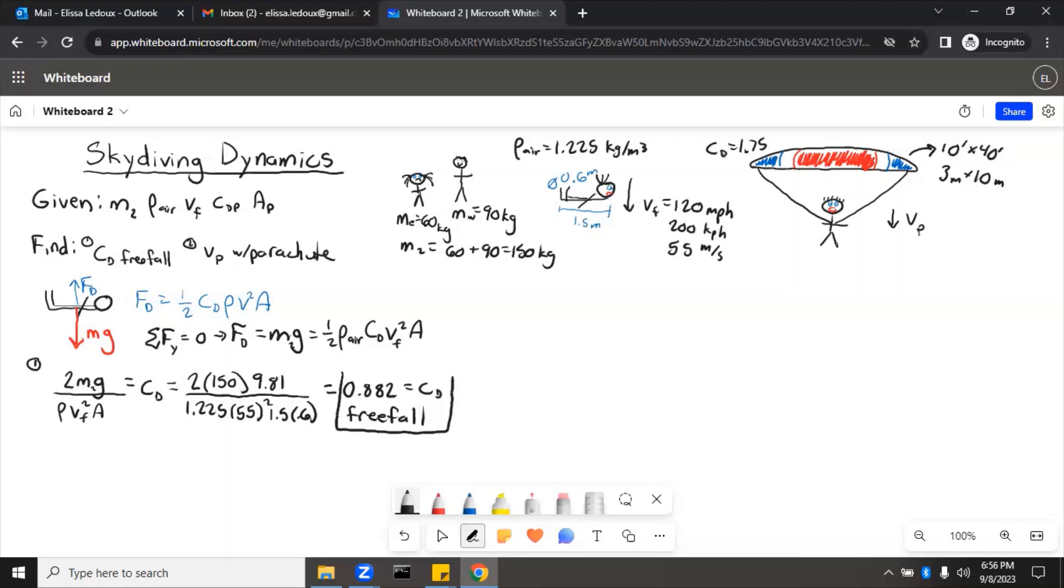So we multiply all this together and we get CD equals 0.882. So 0.882 for a freefall drag coefficient. And just to do a reality check on this, the 0.882 is much smaller than the 1.75, which is the drag coefficient that includes the parachute. So that should make sense.